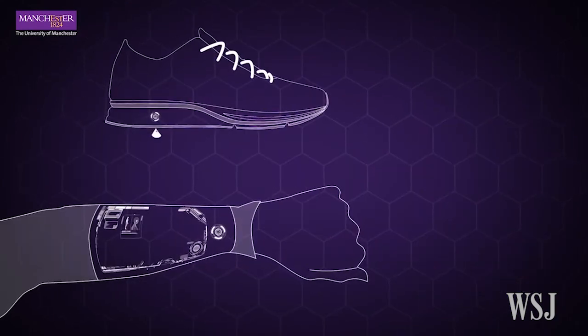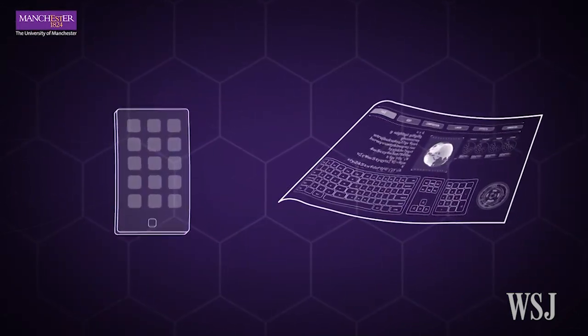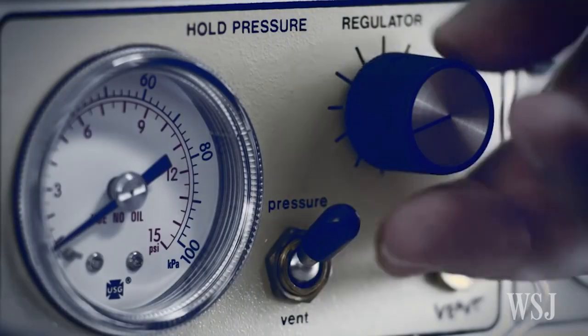If graphene's properties are properly harnessed, it could transform everything from TVs to smartphones and computers. Some scientists are already exploiting the light-related properties of the new material.